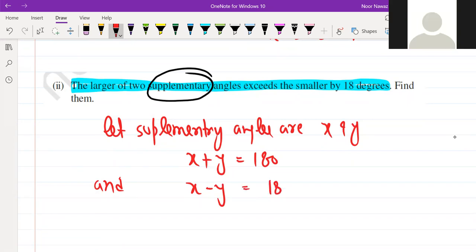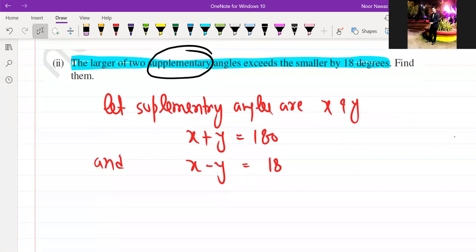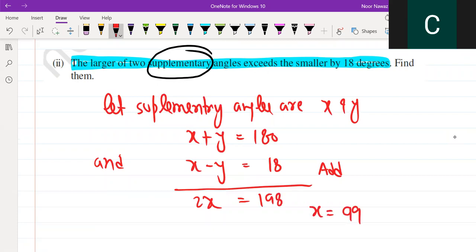Yes sir, we need substitution. Yes. So you add and subtract. What will happen? You will have 2X equals 198. And X will be what? 99. 99.